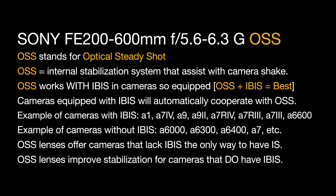OSS is effectively an internal lens stabilization system that's inside the lens and will help you with camera shake. OSS works best with IBIS in cameras so equipped, so the combination of OSS with IBIS is the best possible way to get stabilized images and video. Cameras equipped with IBIS will automatically cooperate with the OSS built into the lens.